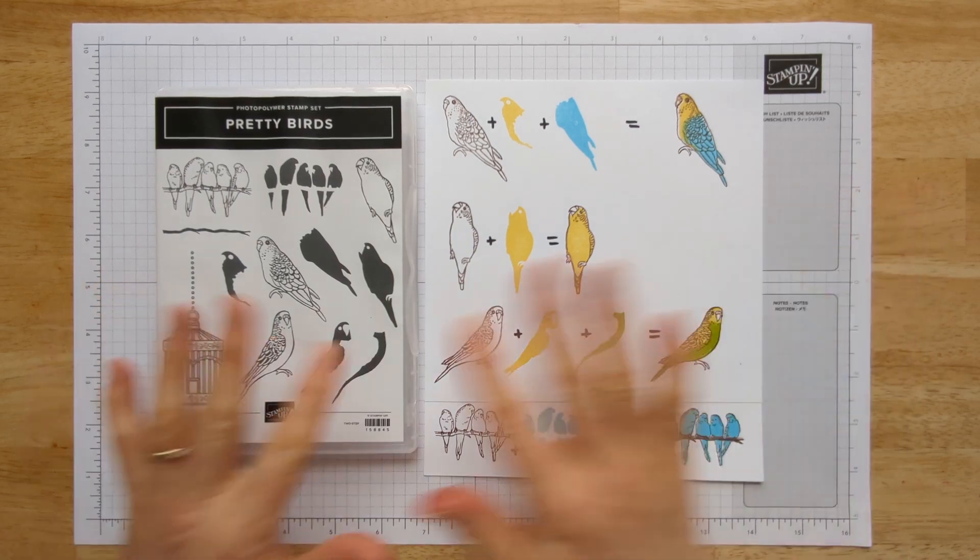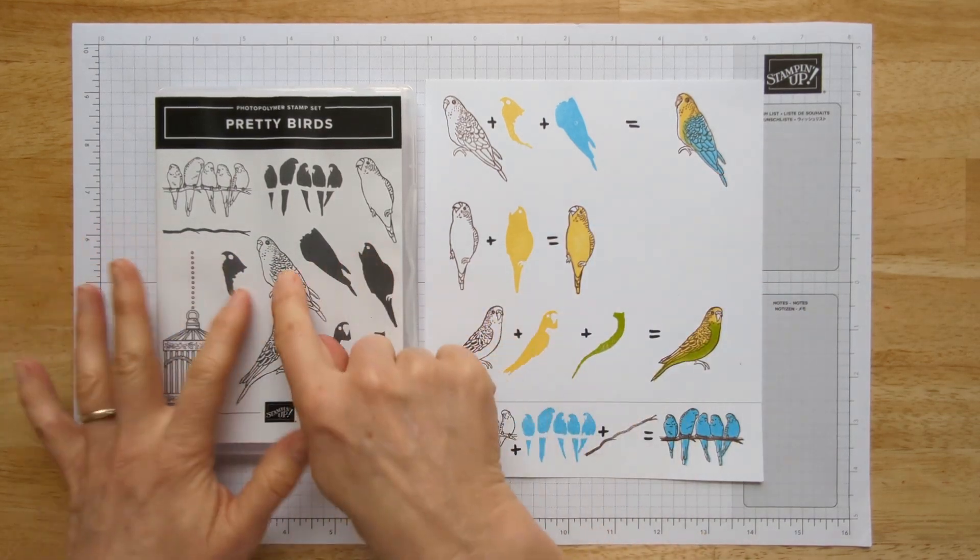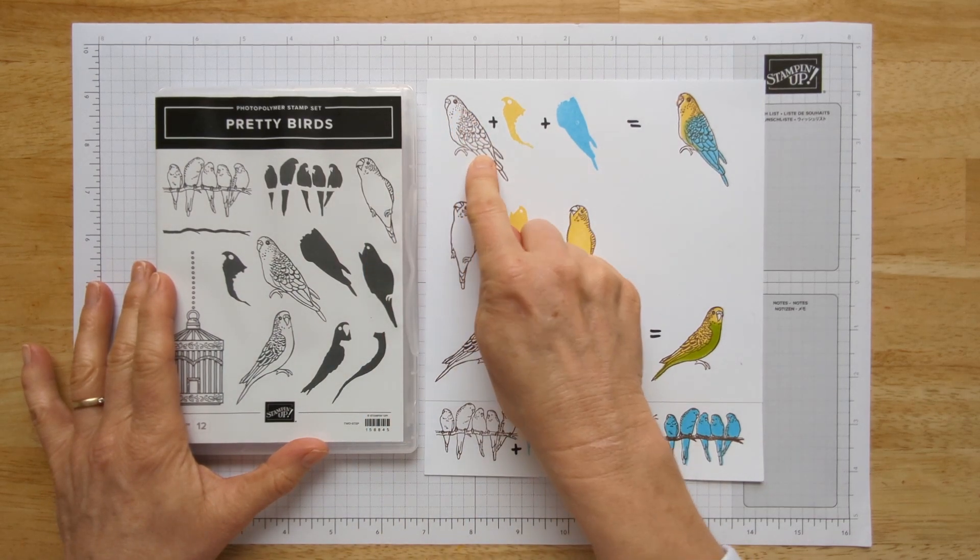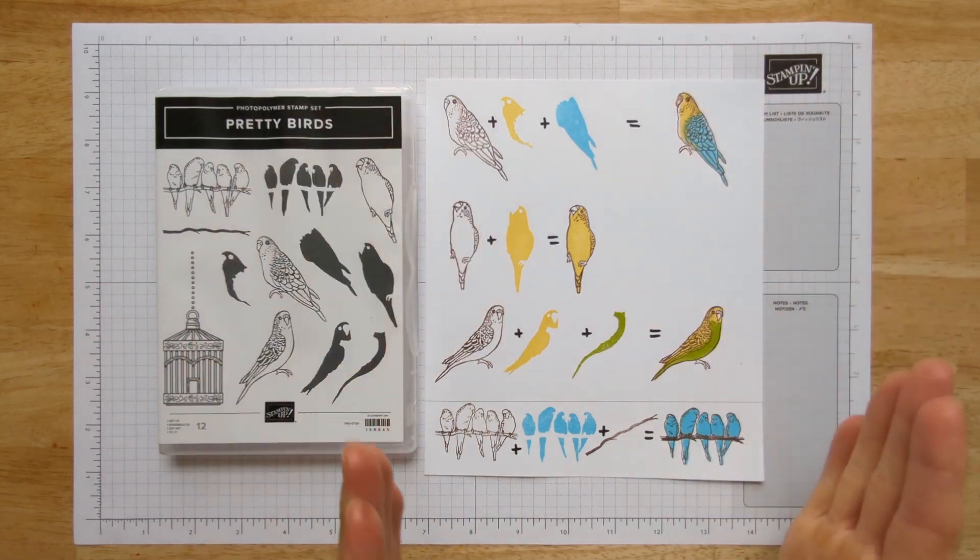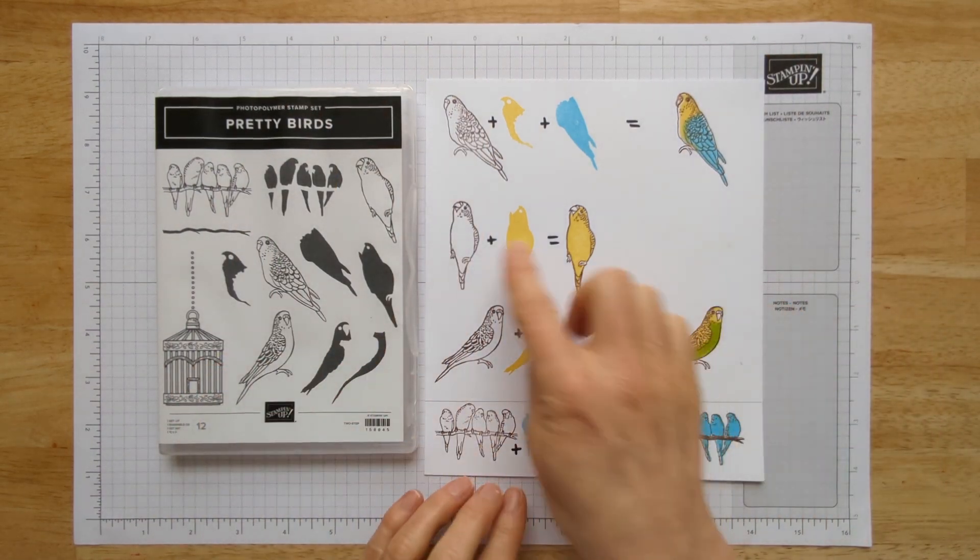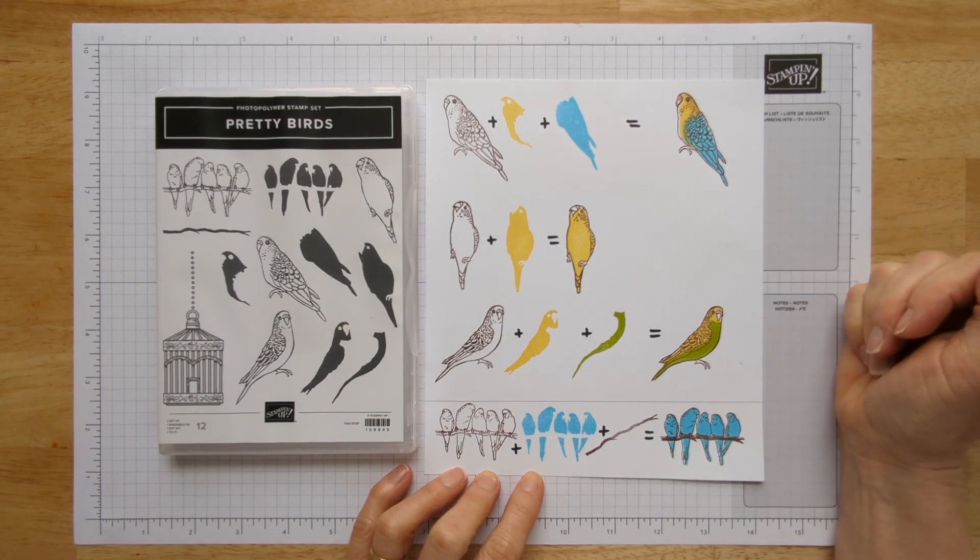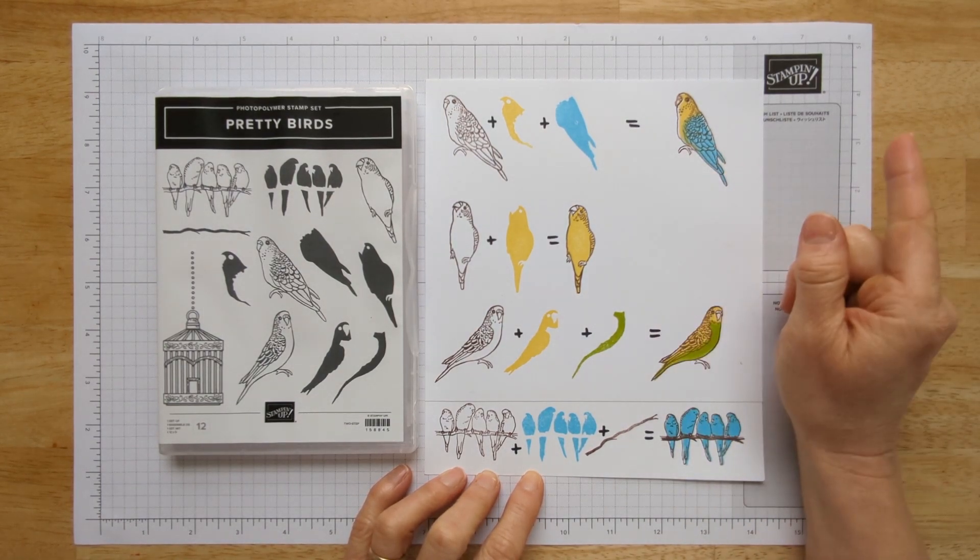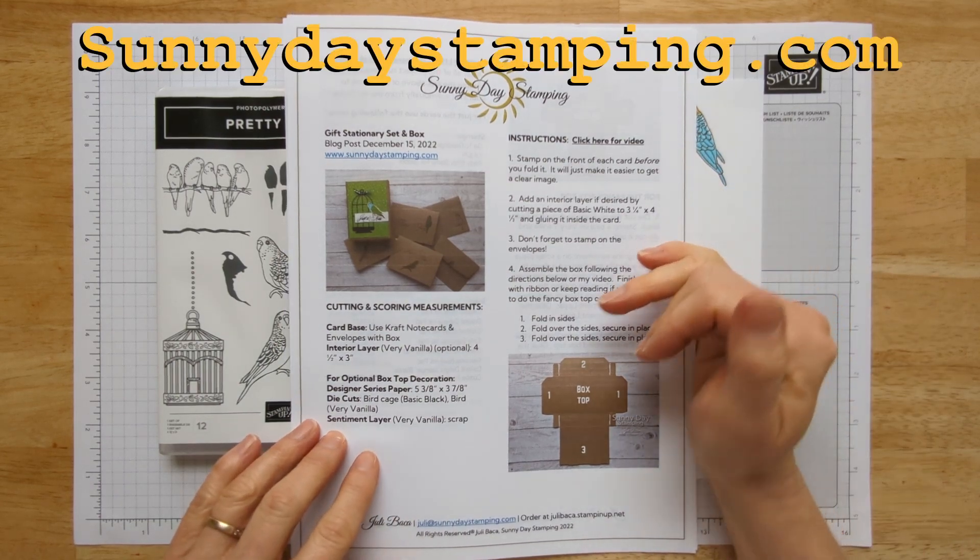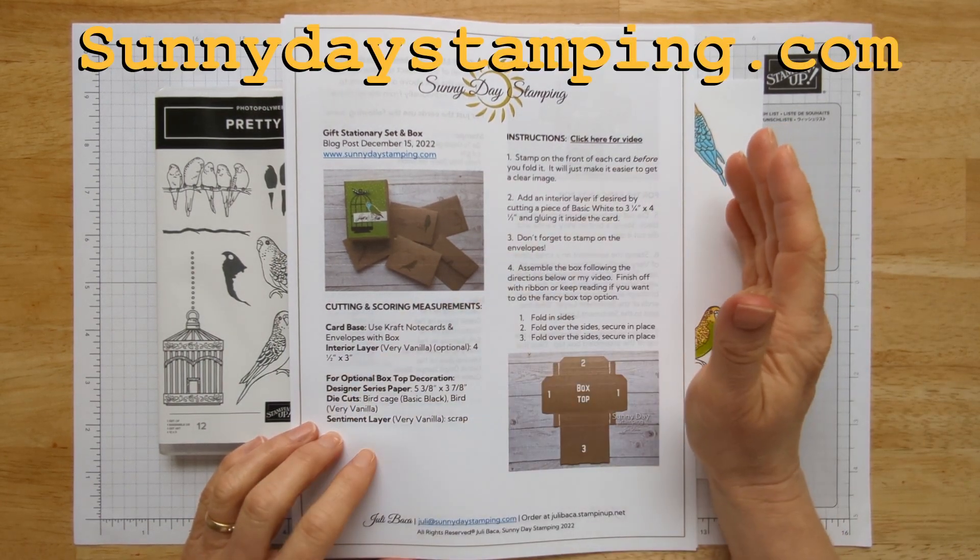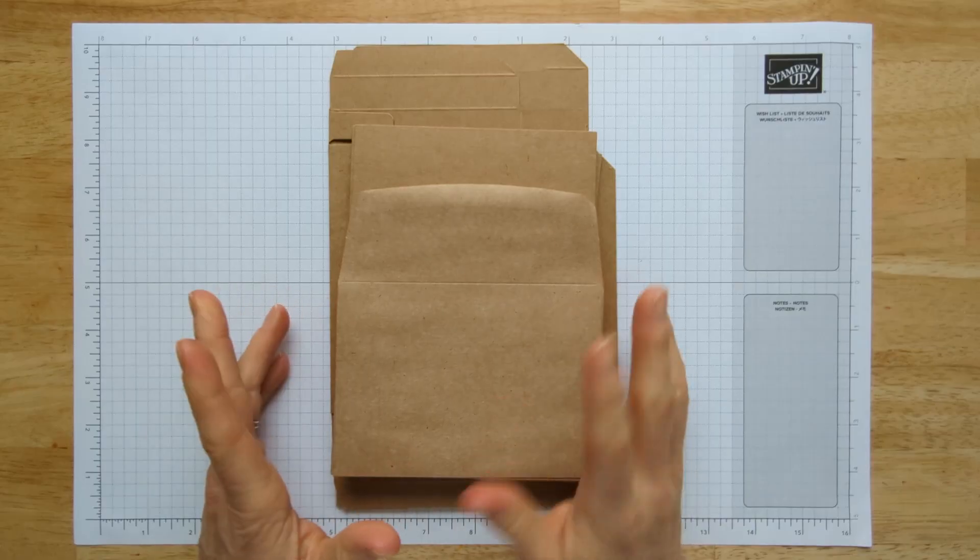So I'm going to start out with a tip. If you have a stamp set that you get and you're like, I do not know how to use these pieces, which is exactly how I felt when I got this one, you can tell that it comes with an outline, but then it comes with pieces that will fill in the bird if you don't feel like coloring it. So I like to just make a map for myself so I can quickly reference what pieces I need to fill in. I'm going to post a picture of this on my blog and I'll also put it on the print and make project sheet. All the information for any of the YouTube videos I make are over on my website, sunnydaystamping.com.